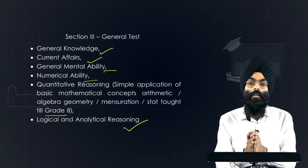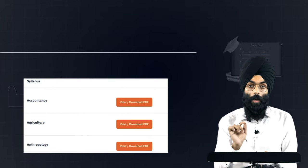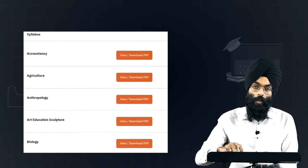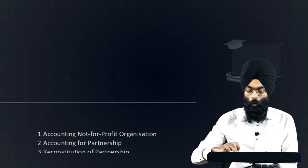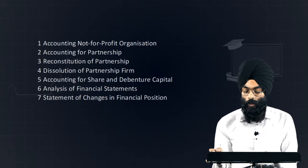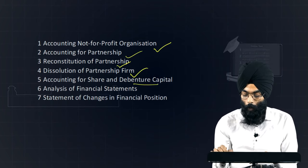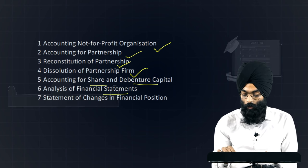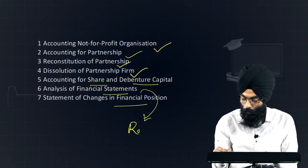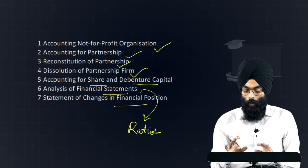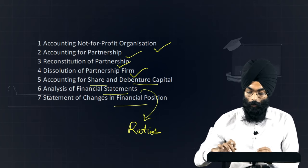For language and general test, the syllabus is generic in nature and you need a good amount of MCQs to practice. For domain-specific subjects, the syllabus is available on the CUET website. For accountancy, for example, the syllabus includes accounting for not-for-profit organizations, partnership, dissolution of partnership, share capital and debentures, financial statements, cash flow statements, and analysis of financial statements including ratios — which is essentially the Class 12 syllabus, but the pattern is MCQs.